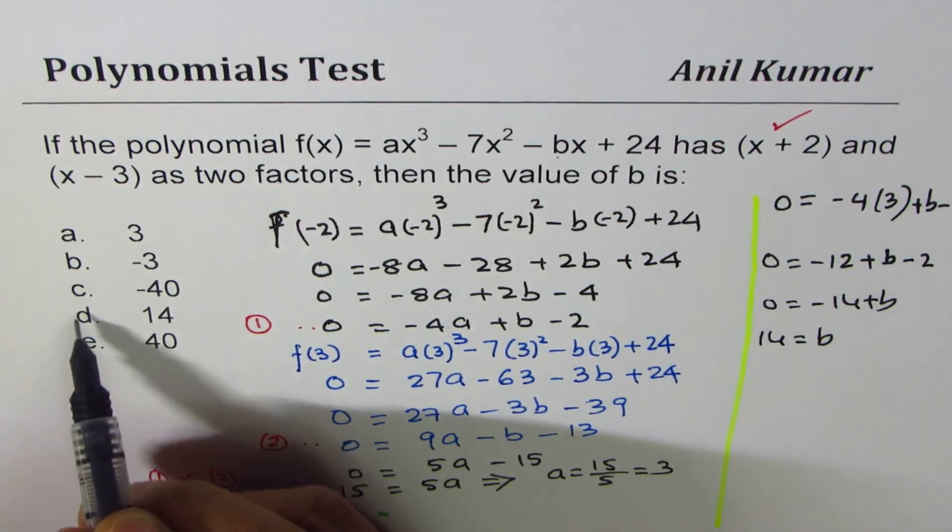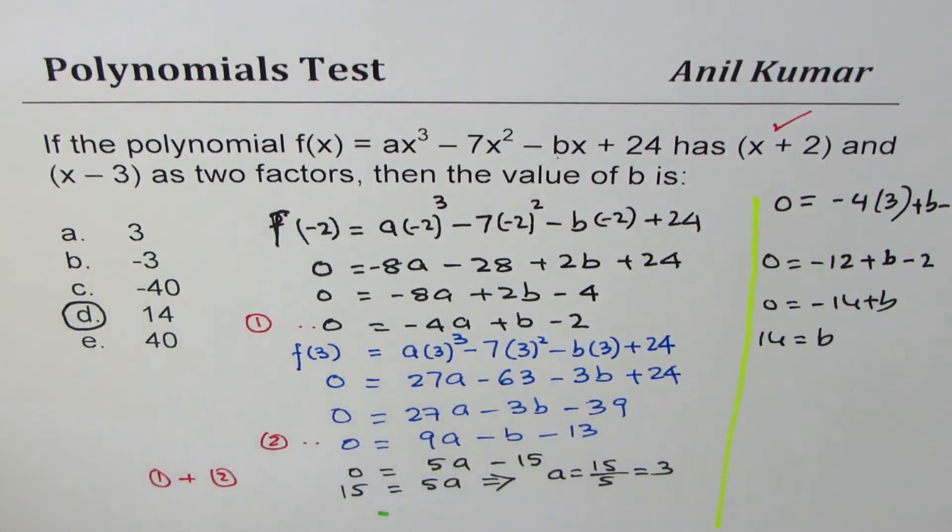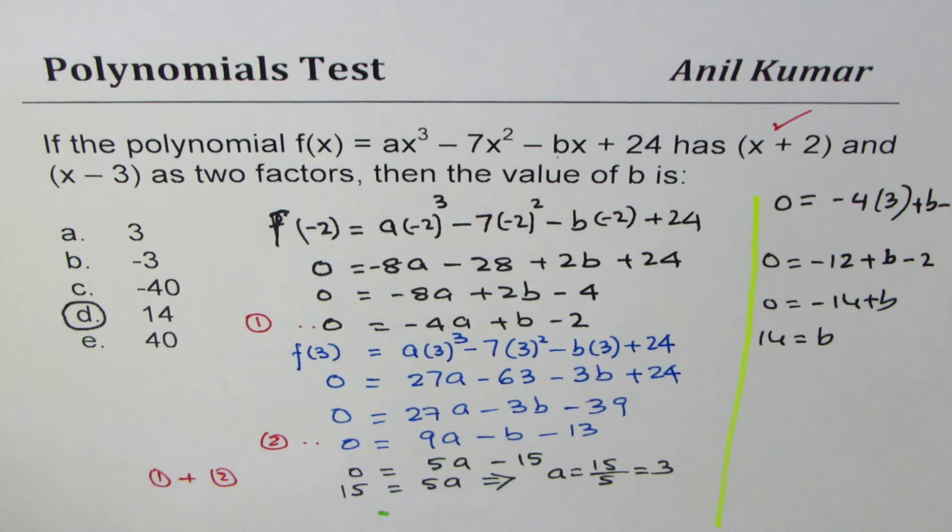So, we get the value of b as 14. Out of the choices, d matches, so the value of b is 14. I'm Anil Kumar, and I hope this solution helps you, and gives you a method of finding the value of the unknowns.